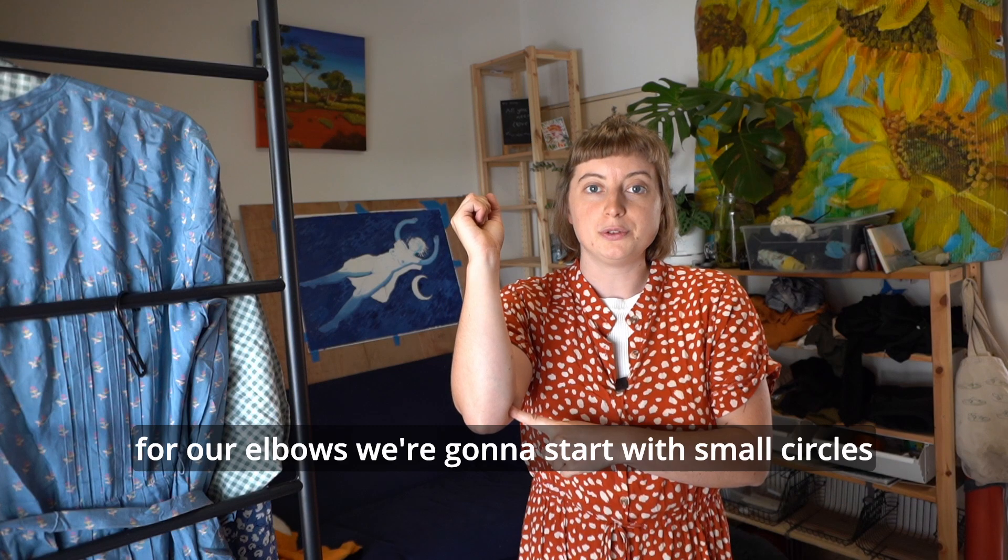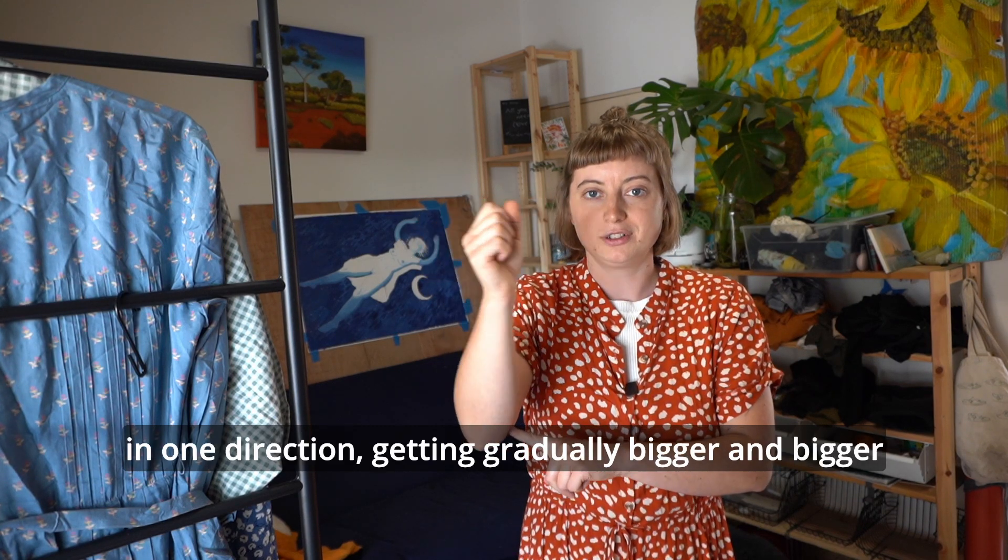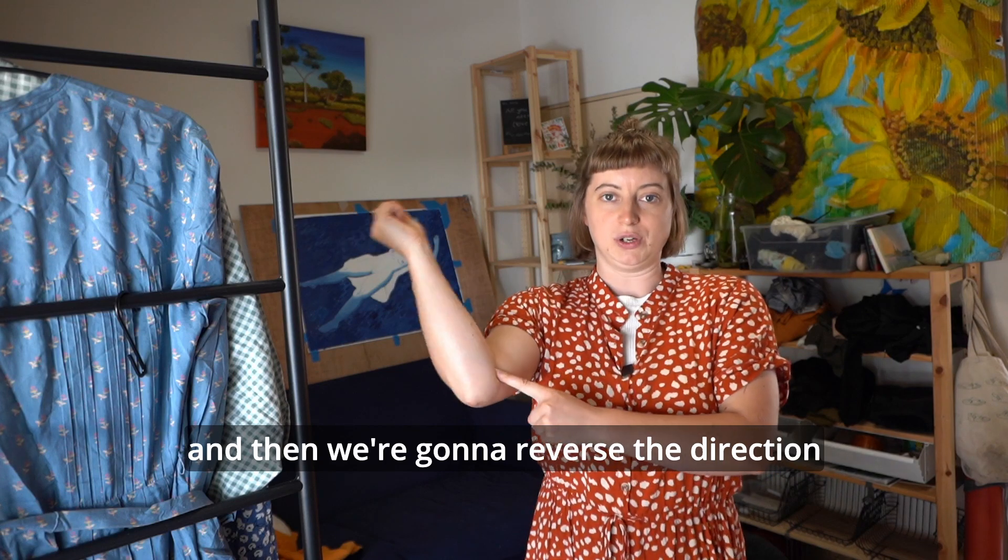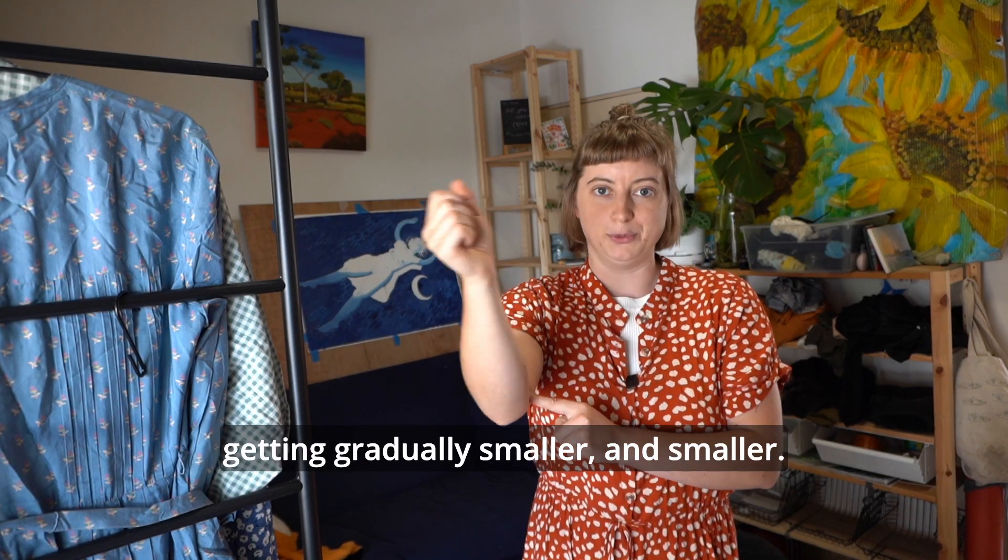For our elbows, we're going to start with small circles in one direction, getting gradually bigger and bigger, and then we're going to reverse the direction, getting gradually smaller and smaller.